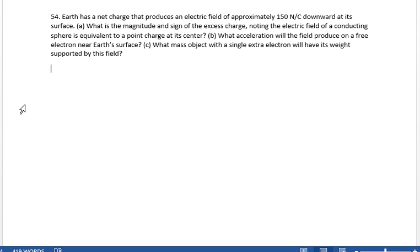Because the electric field is pointing toward it, we know that it is a negative charge. And all we have to do is figure out the magnitude. So we have E equals KQ over R squared.